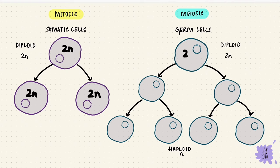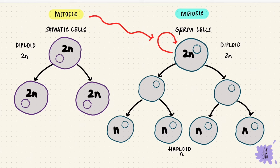In meiosis, after two series of divisions, one diploid cell divides into four haploid cells, so the number reduces by half. If a germ cell were to form more germ cells, that would be by mitosis. But for a germ cell to form gametes, that is by meiosis.